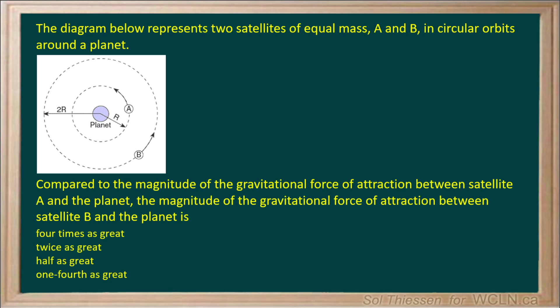The diagram below represents two satellites of equal mass, A and B, in circular orbits around a planet. Compared to the magnitude of the gravitational force of attraction between satellite A and the planet, the magnitude of the gravitational force of attraction between satellite B and the planet is four times as great, twice as great, half as great, or one-fourth as great?